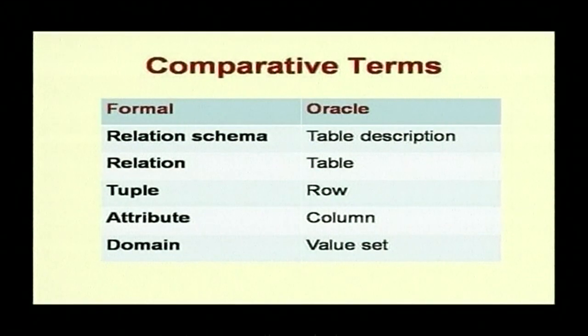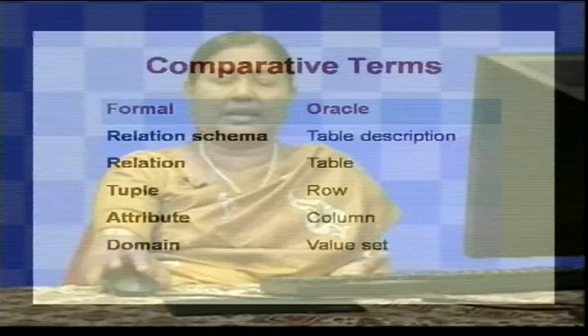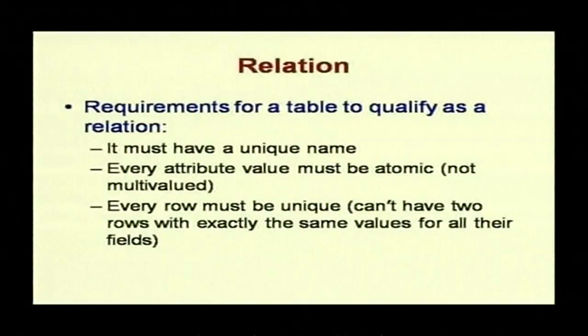Looking at comparative terminology in Oracle: relational schema is called 'table description,' relation is called 'table,' tuple is called 'row,' attribute is called 'column,' and domain is called 'value set.'